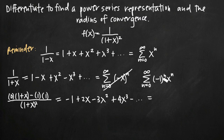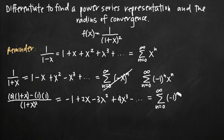That equals the derivative of the infinite sum with respect to x. A lot of people get tripped up here — we're treating n as a constant, so negative 1 to the n is just a constant coefficient on x to the n. Using the power rule, we bring n down in front of x and subtract 1 from the exponent, giving us the sum from n equals 0 to infinity of negative 1 to the n times n times x to the n minus 1.